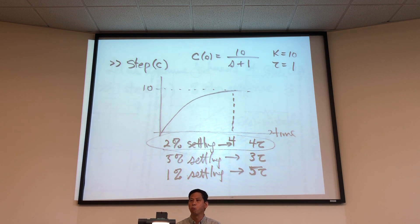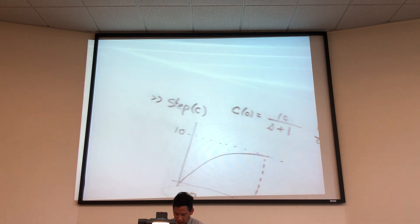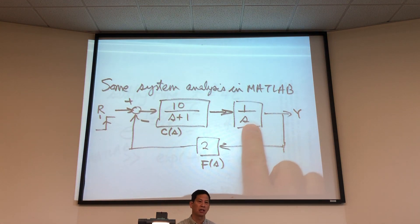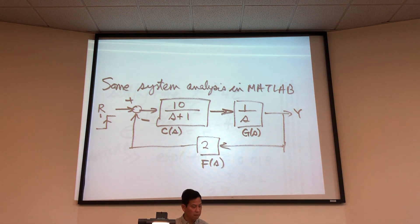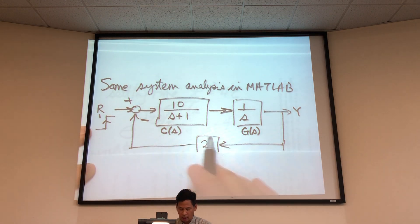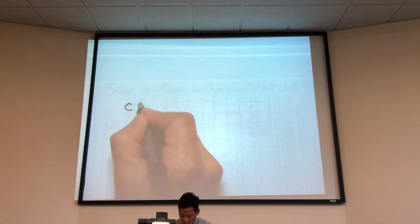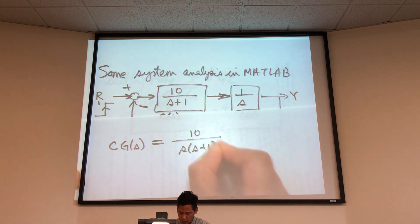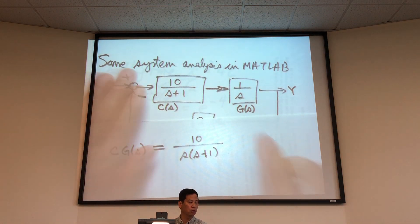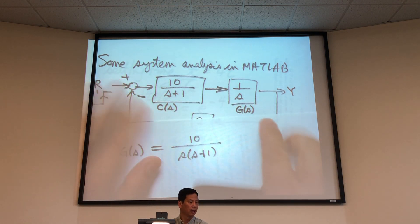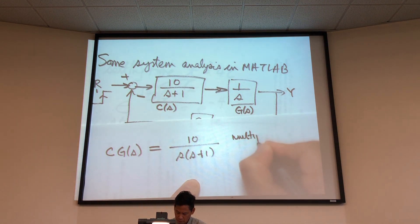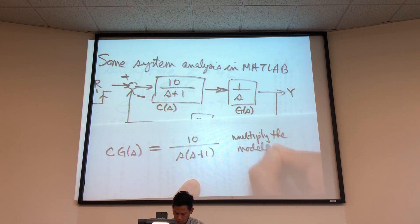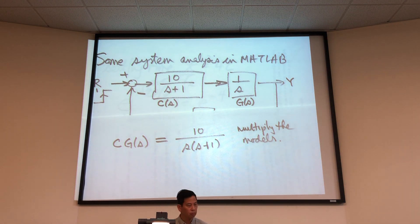Now we want to start analyzing this model as a whole. Let's take a look at CG of S, which is the product of C and G. By hand, that's 10 over S times (S plus 1). Remember block diagram algebra — two blocks in series means I multiply their transfer functions. In the Laplace domain this is multiplication; in time you'd have to do convolution, which is complicated. So we work in the transform domain and just multiply the models.